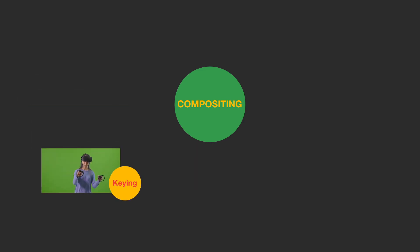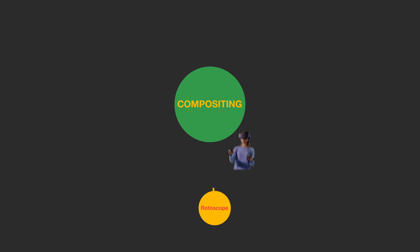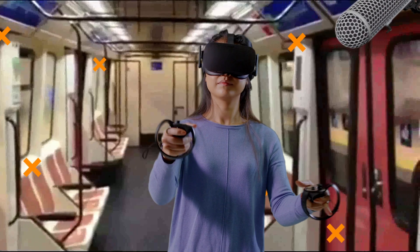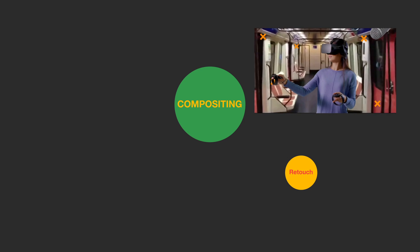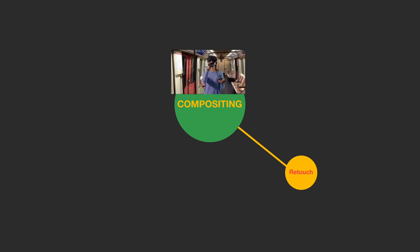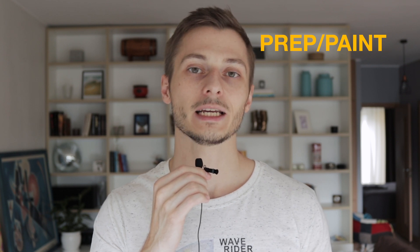If there's a green screen that needs to be removed in the scene, the shot is first sent to the keying department who removes the green screen, prepares the image for you, and then sends it out to you to be composited. Sometimes there are scenes without a green screen where an object needs to be cut out from the background — that's the rotoscoping department. They cut the object frame by frame from the background. Sometimes there are objects that should not be there, like tracking points or a boom microphone, and those are removed in the retouching department — they paint out unwanted objects and create a clean shot. All three are called prep paint, which stands for preparation and painting — basically cleaning out the shots.